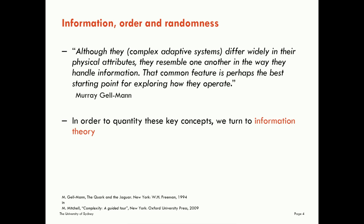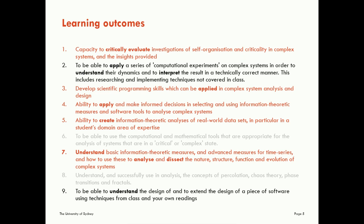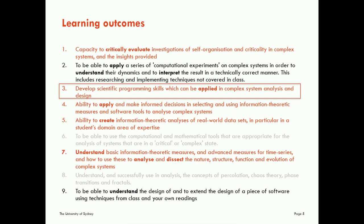So in order to quantify all of these key concepts, we're turning to information theory. Before we get started, let me go over the learning outcomes for this course on information theory and complex systems. At a very basic level, I want you to understand the measures of information theory — the basic measures as well as more advanced measures for time series — and how we're going to use these to analyse and dissect the nature, structure, function and evolution of complex systems. More importantly, I want you to be able to apply them, so we're going to develop scientific programming skills applicable to empirical complex systems analysis as well as design.